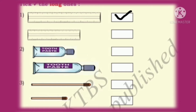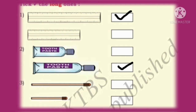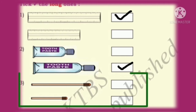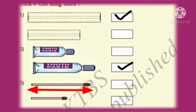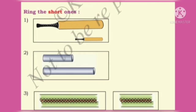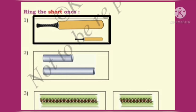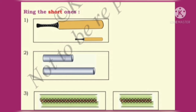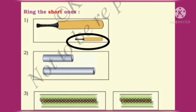Next, we have ticked the long ones. Next, we have to ring or circle the short ones. So, let us put a tick mark for the second box. Next, we have to ring or circle the short ones.